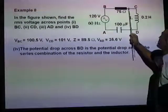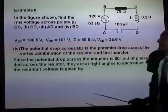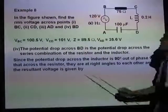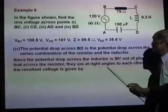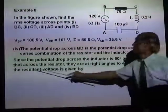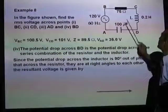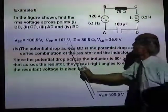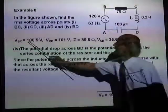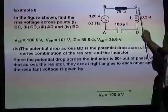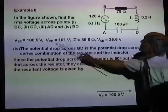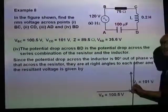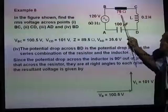To calculate VBD, you need to find the total impedance. Since the potential drop across the inductor is 90 degrees out of phase with the drop across the resistor, they are at right angles to each other. VR is 100.5 volts — that is the potential drop across the resistor — and the potential drop across the inductor, VCD, is 101 volts.